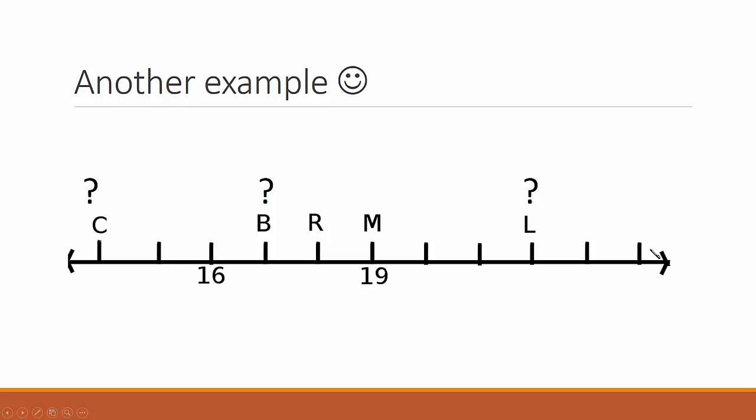Can we fill in the coordinates on this line? We have two of them. If we count through 17, 18, 19, we can see the unit distance is 1. So what coordinate would go under B? Hmm. What about L?